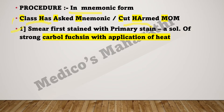The first step of the procedure is to stain the smear with the primary stain — that is a solution of strong carbol fuchsin with application of heat. In the mnemonic, 'C' stands for carbol fuchsin and 'H' stands for heat. So first we add carbol fuchsin to the smear, and then we apply heat.